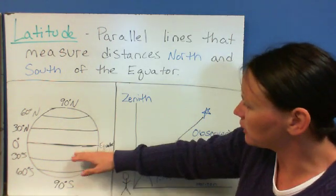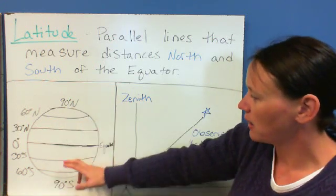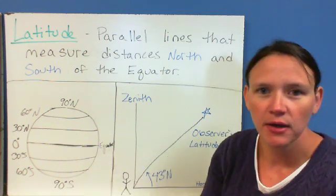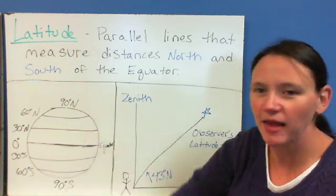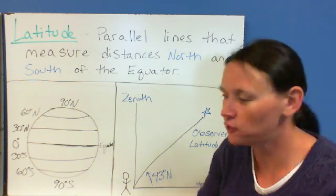So, you've got right here, here's zero degrees. Then 30 north, 60 north, 90 north. And then below it, 30 south, 60 south, 90 south. So, this is how the lines of latitude run. You can kind of think about it like rungs on a ladder latitude. You're climbing up the ladder.